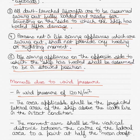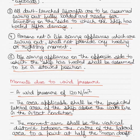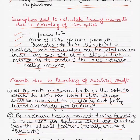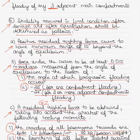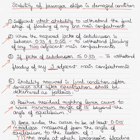The wind acts on the area of the vessel above the waterline. The applicable area shall be the projected lateral area of the ship above the waterline in intact condition, and the moment arm shall be the vertical distance between the center of the lateral area to the point at half the mean draft. The main factors in damage stability calculations for passenger ships are the crowding of passengers, wind force, and the launching of survival crafts. This video is for people sailing on passenger ships or preparing for oral exams — you don't need to know more than this from an exam point of view.